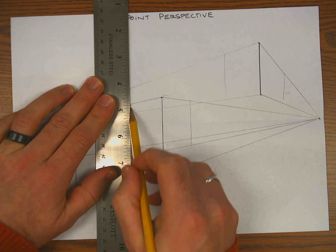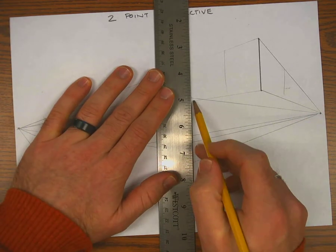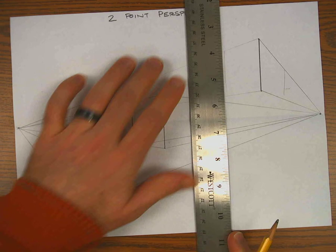Then after I lightly sketch it, I'm going to go in with my ruler and make that line darker and make sure it's nice and straight.